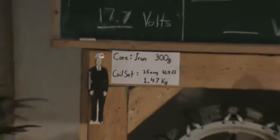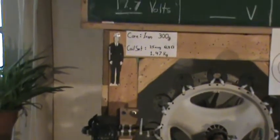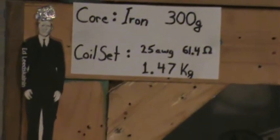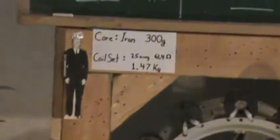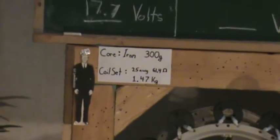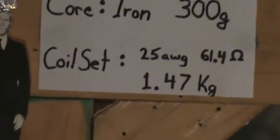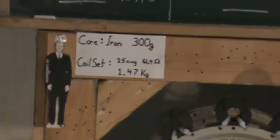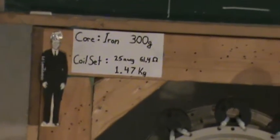The iron core weighs 300 grams. And the coil is a set. It's 25 American wire gauge magnet wire. And as they test across those two leads right there, if I flip that meter to resistance measurement, it would measure 61.4 ohms resistance. And the coil set together with no iron, just the copper and the little plastic spools is 1.47 kilograms. So basically one and a half kilograms of copper on there.